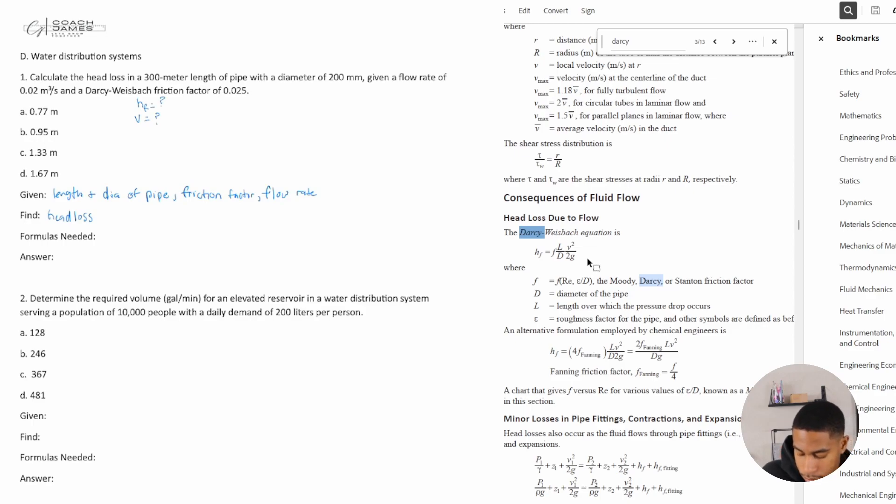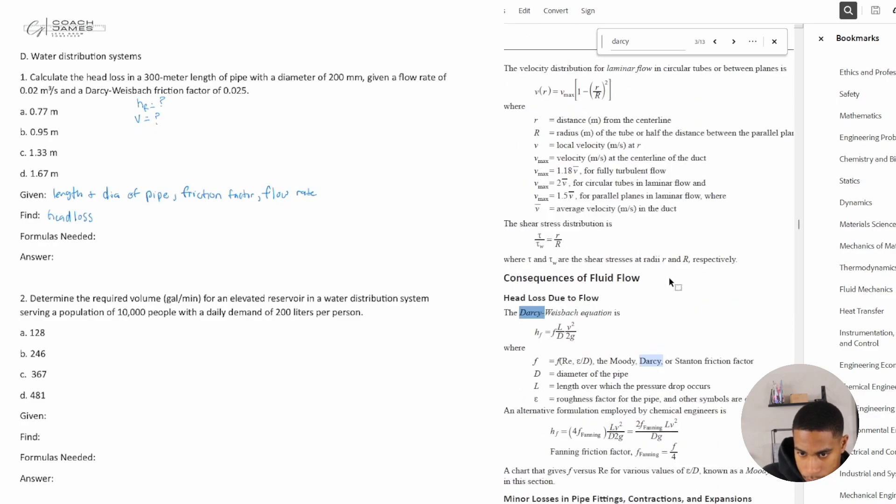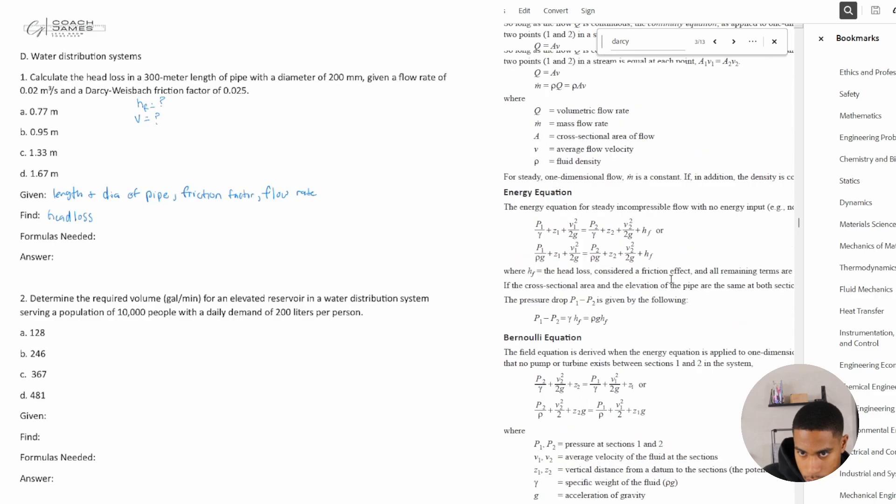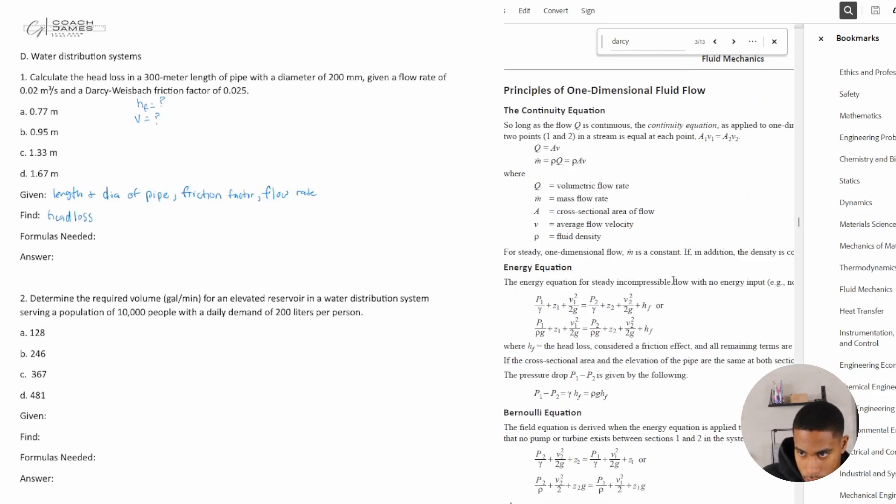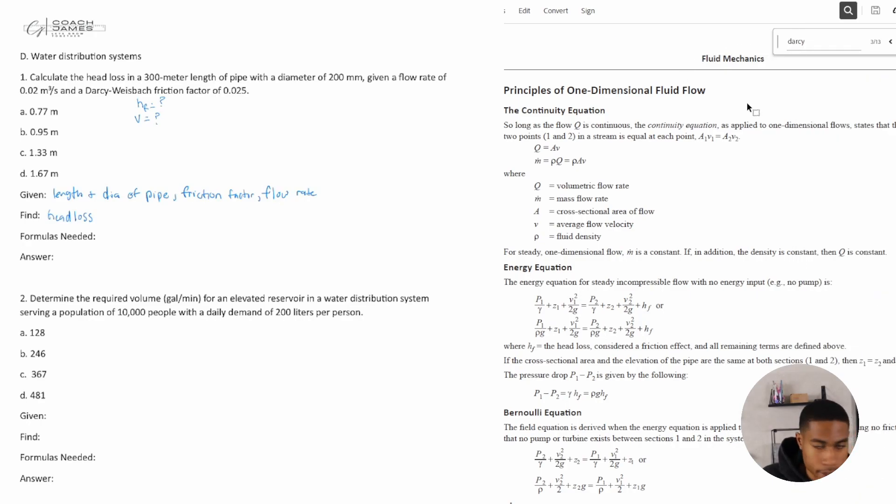So it looks like we don't have h_f and we don't have v. Can we get v? Well, I know we have Q and we have the cross-sectional area A. So there's a formula that's pretty important where if you're looking at a one-dimensional flow, Q (volumetric flow rate) is equal to A (cross-sectional area of flow) times v.